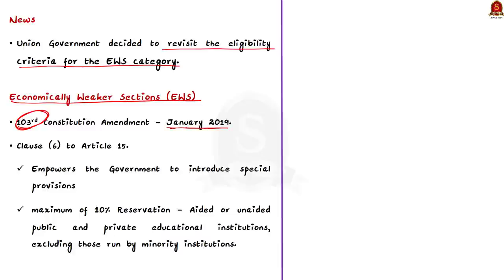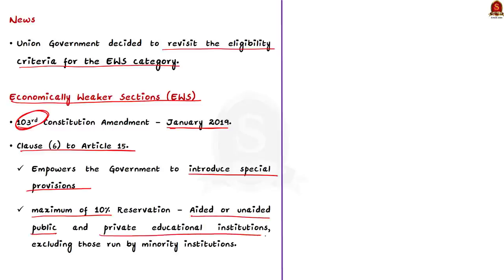This amendment brought two important changes. One was that it added Clause 6 to Article 15. This clause empowers the government to introduce special provisions for the EWS among citizens, excluding those who already enjoy reservation. It allows for reservation of up to a maximum of 10% in aided or unaided public and private educational institutions, excluding those run by minority institutions.